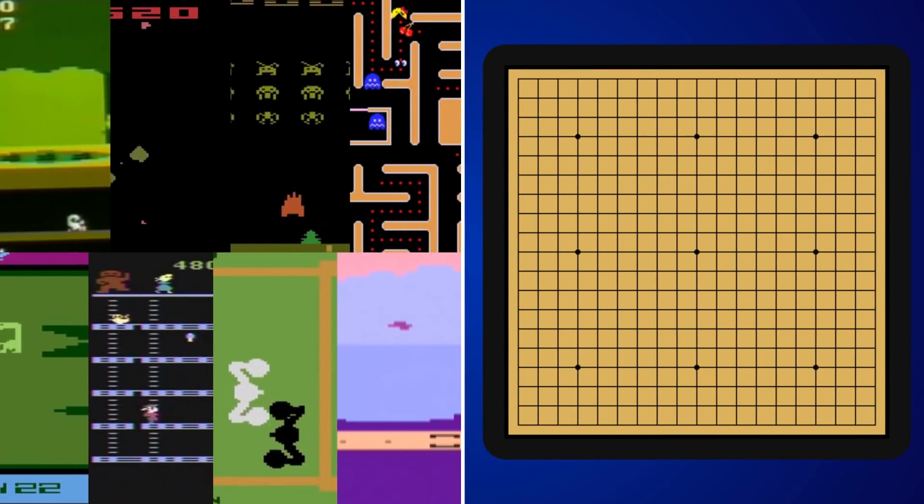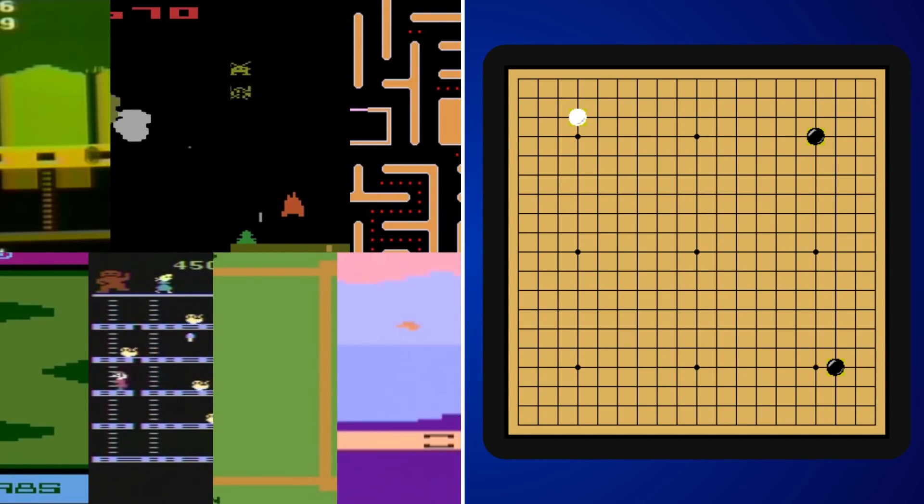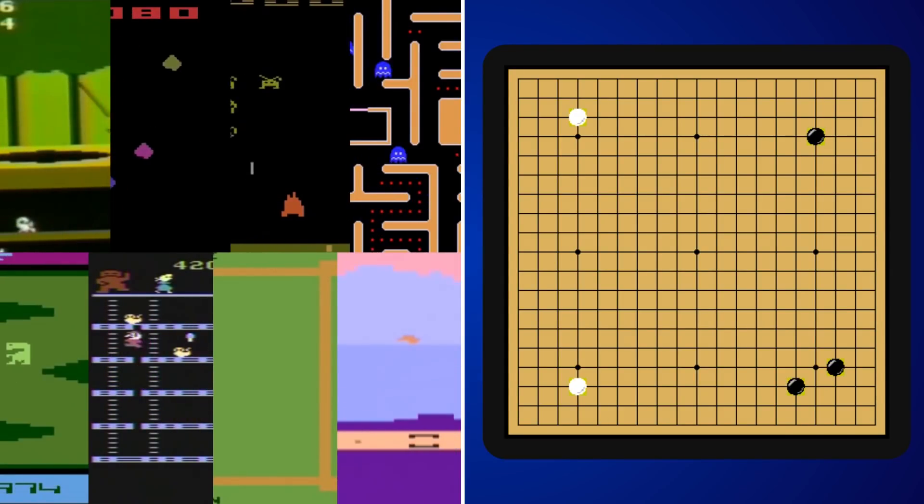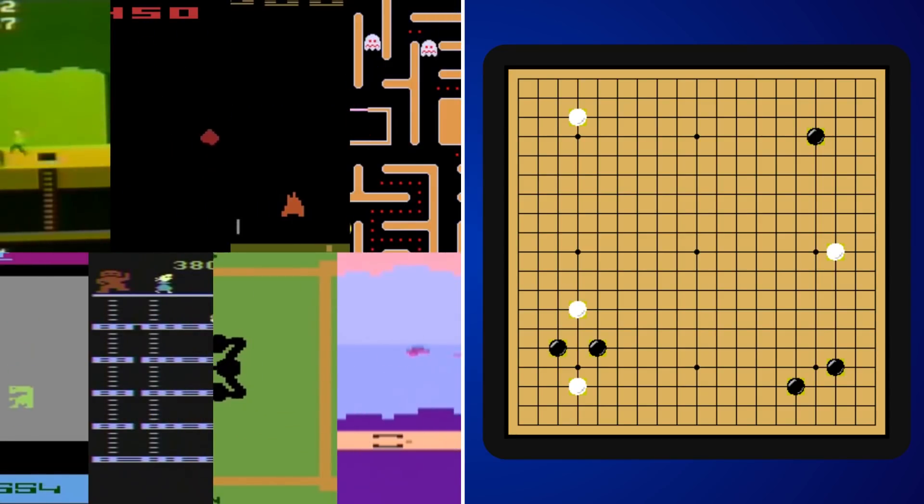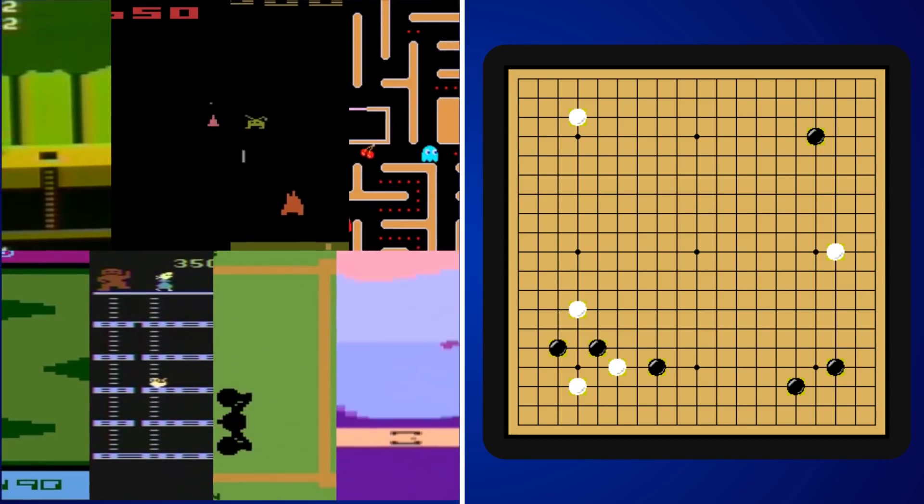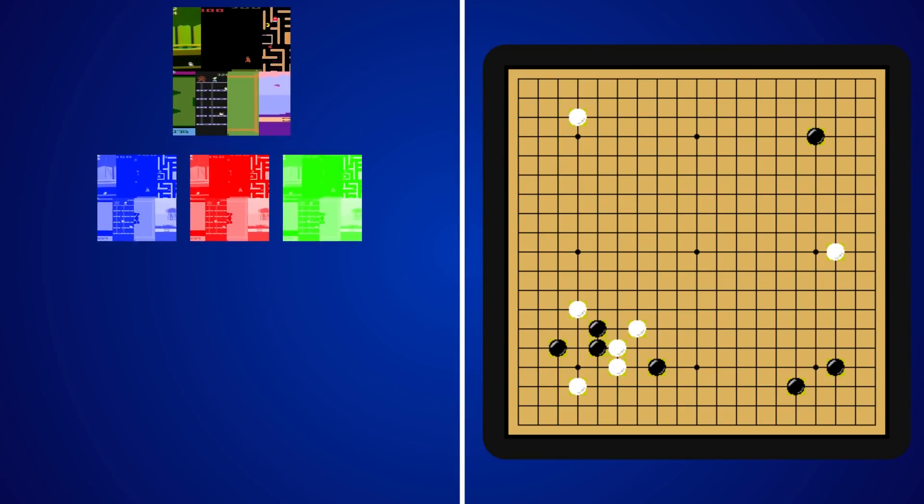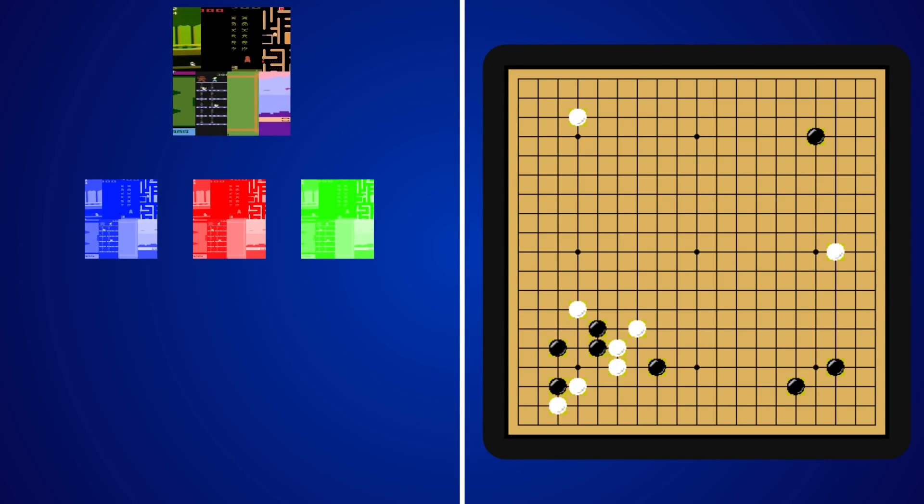When DeepMind beat all those Atari games using the same algorithm a few years ago or when they created the AI that beat the best Go player in the world last year, the AI community was blown away. But if you think about it, the algorithms they used weren't novel at all. In fact, they've been around for decades.